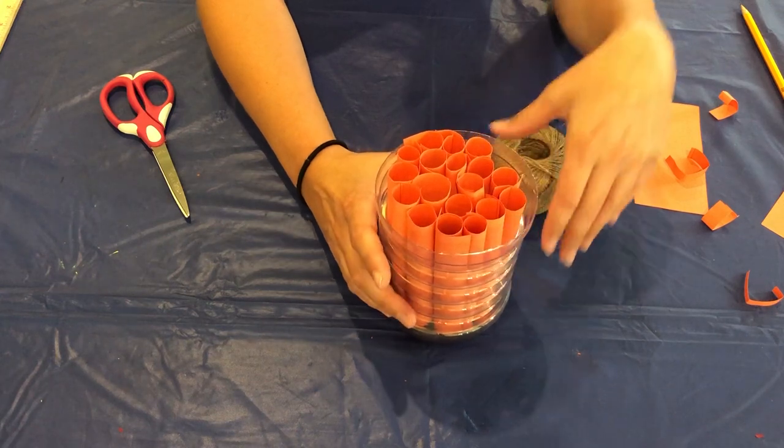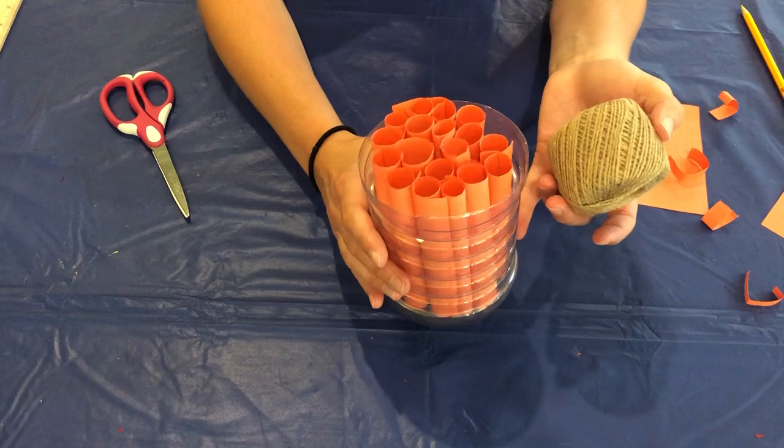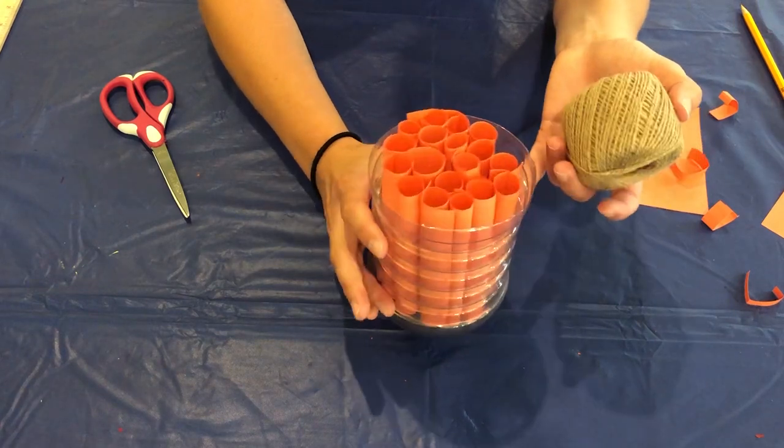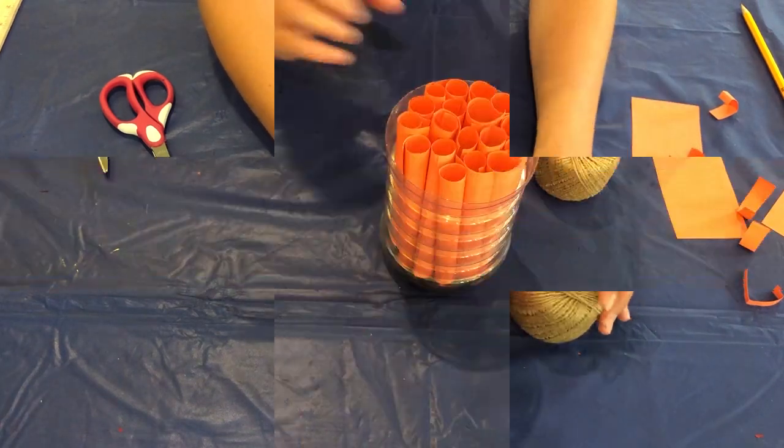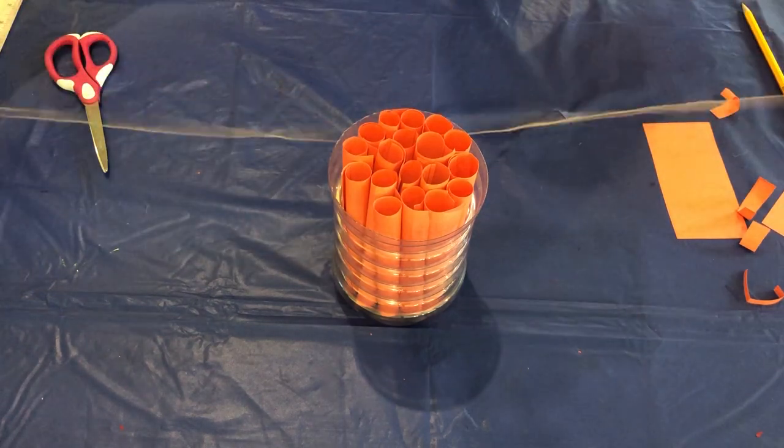What we're going to do now is you're going to take some string and we're going to make it so that you can hang this from a tree or a bush or something like that. So let's go ahead and do that. Let's go ahead and make our handles so that we can hang this up. String ready.